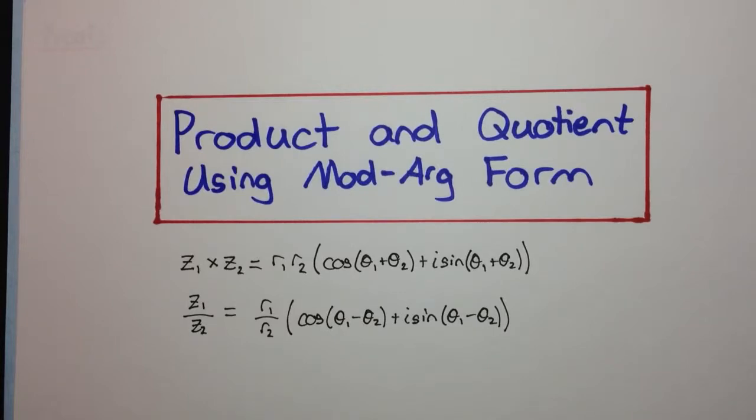So you might ask yourself, well what's the purpose of having this mod arg form? We had a perfectly fine expression for a complex number in terms of its Cartesian expression, z equals x plus iy. Why do we need this mod arg form? Well it turns out that mod arg form is very helpful in doing certain things with complex numbers.